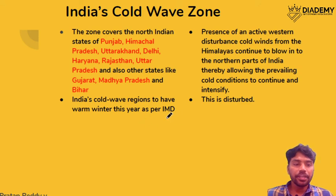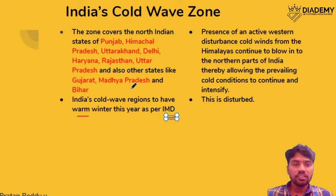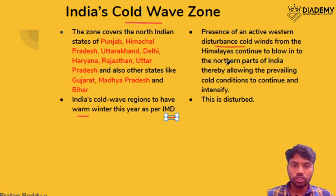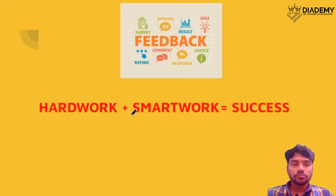According to IMD, India has been experiencing warm winters this year. Cold waves typically affect Punjab, Himachal Pradesh, Uttarakhand, Delhi, Haryana, Rajasthan, Uttar Pradesh, and to some extent Gujarat, Madhya Pradesh, and Bihar. Cold waves are generally driven by western disturbances that bring cold air into northern India. However, these western disturbances have been disrupted due to climate change, leading to the observed warm winters. Please continue with your preparation and share feedback about the classes.